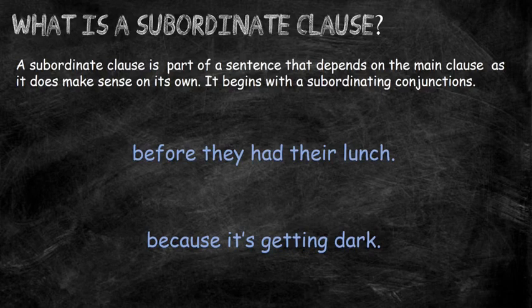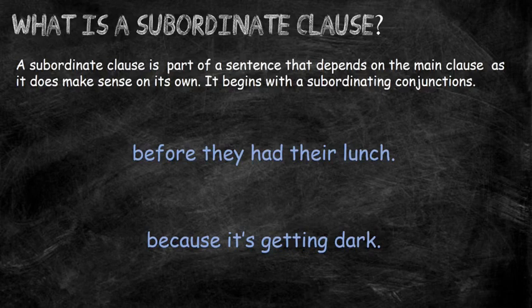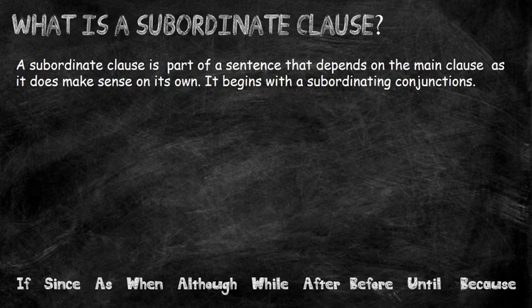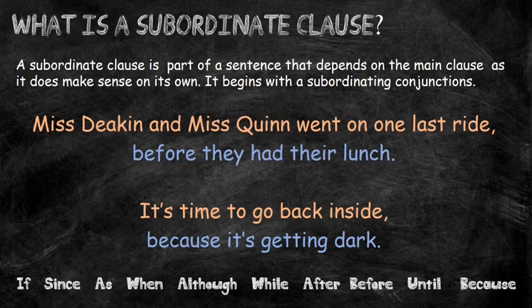So what is a subordinate clause? A subordinate clause is part of the sentence that depends on the main clause — it relies on it. If it didn't have the main clause, it would not make sense on its own. The second thing to remember is that it must begin with a subordinating conjunction. So I've got two examples here: 'Before they had their lunch' and 'Because it's getting dark.' Neither of those two make sense as sentences on their own, but if you add them to a main clause, the sentence starts to make much more sense.